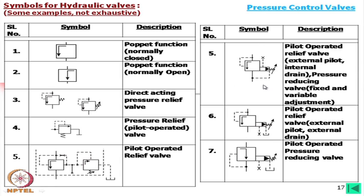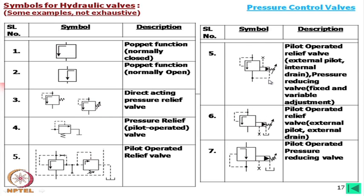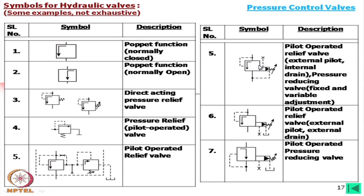Wherever a pressure reducing valve is used, there is also a separate relief valve connected near the pump, and a built-in relief valve within the pressure reducing valve for flow routing. For the pilot operated relief valve with external pilot and external drain, there is no line from the downstream — so it is a relief valve. The pilot-operated pressure reducing valve shows pilot connection from the downstream without the relief valve function symbol.